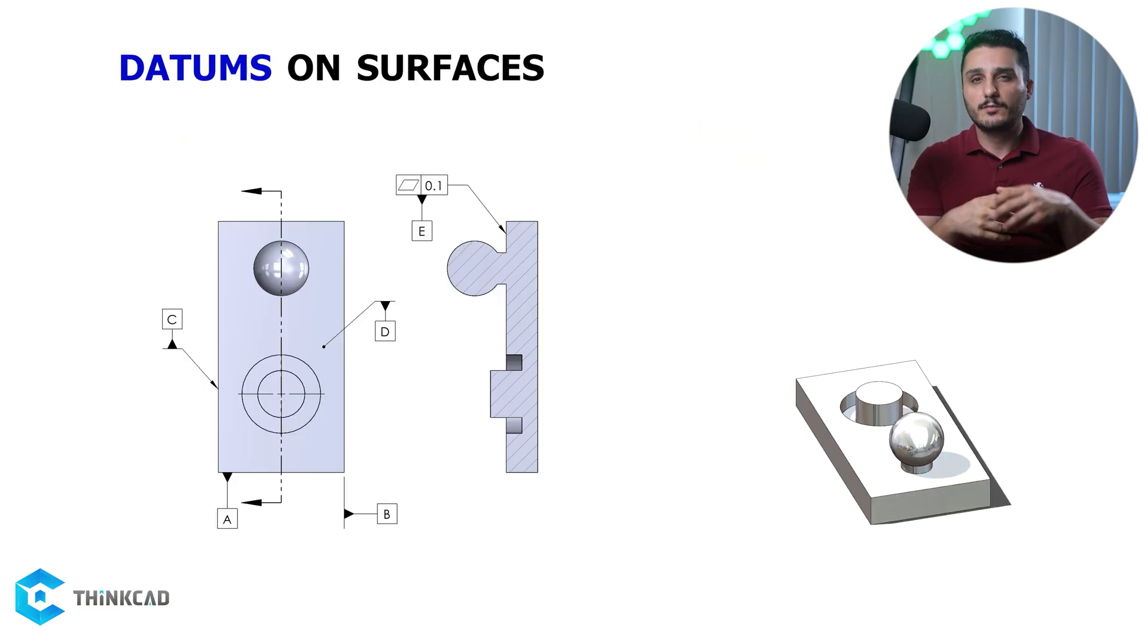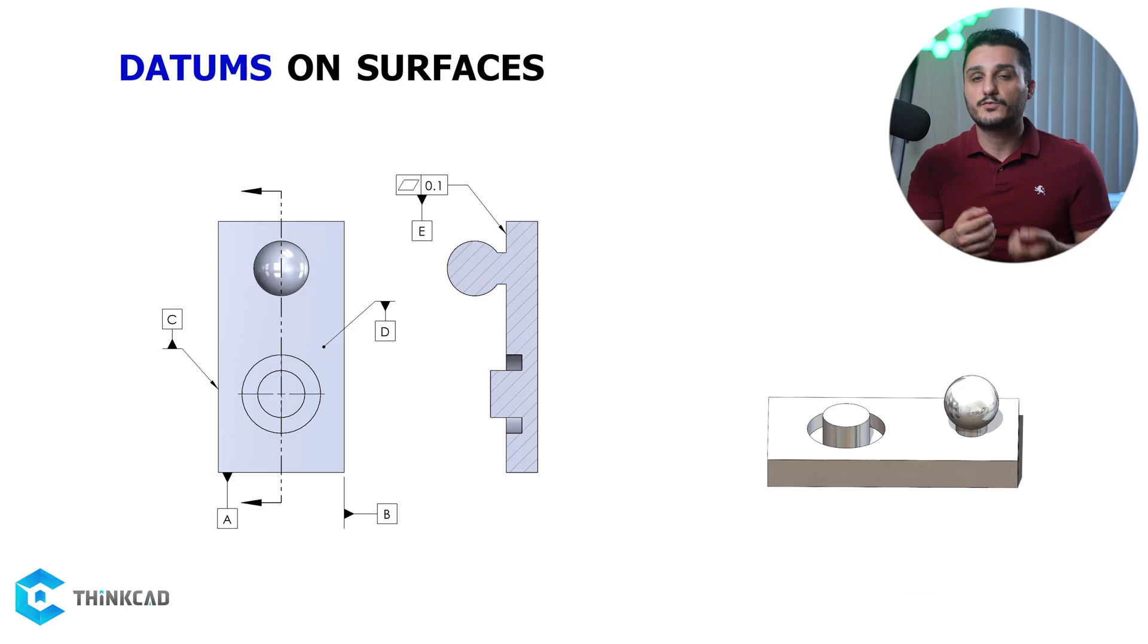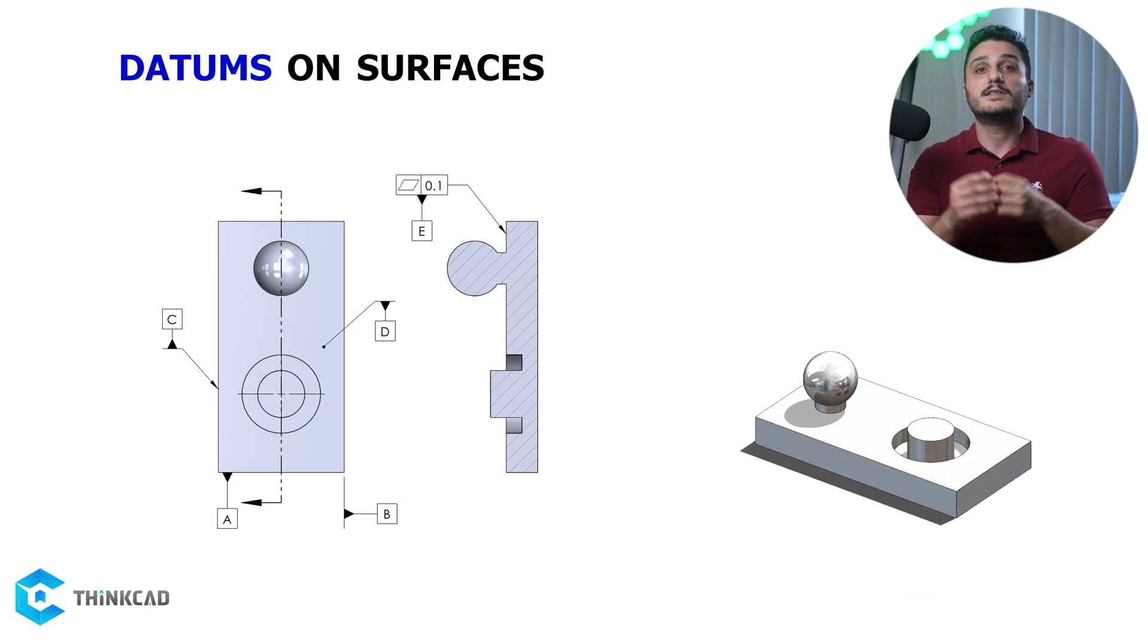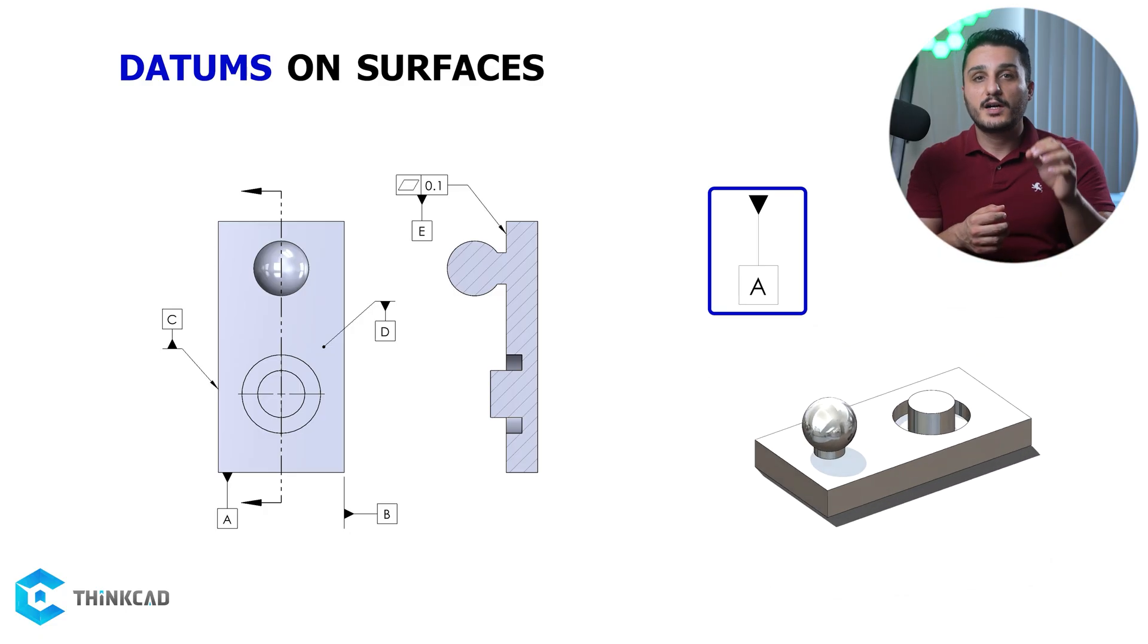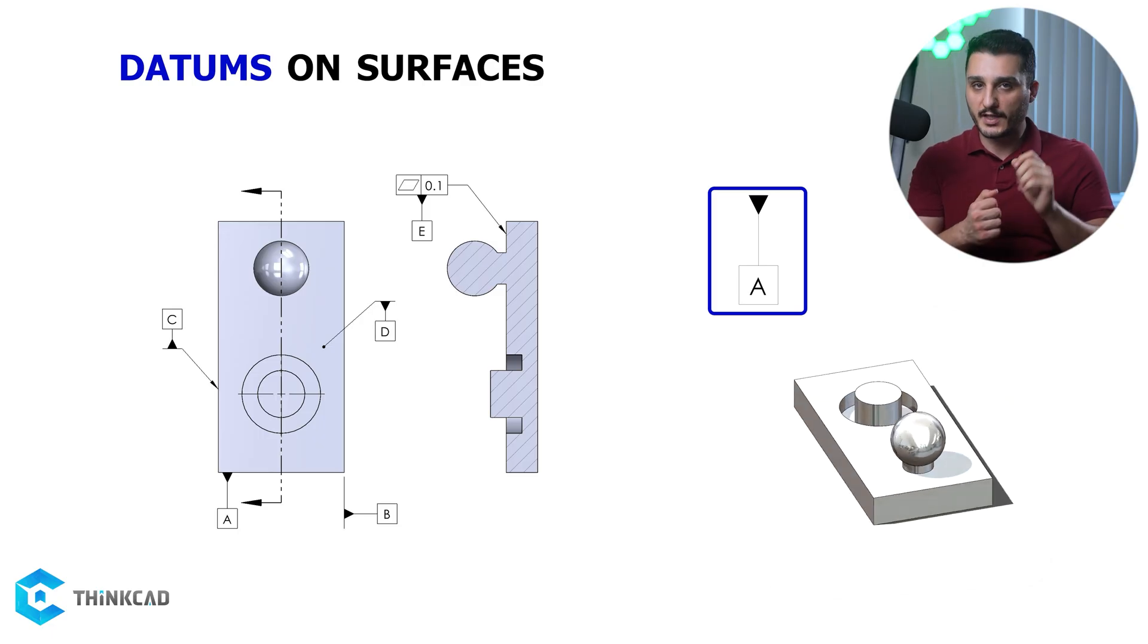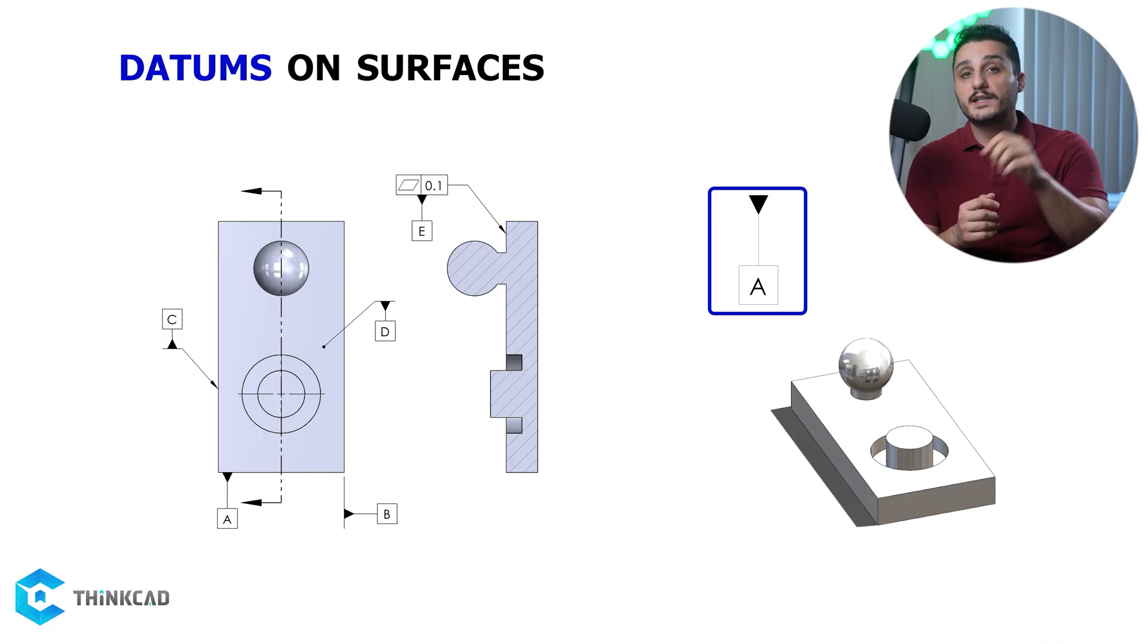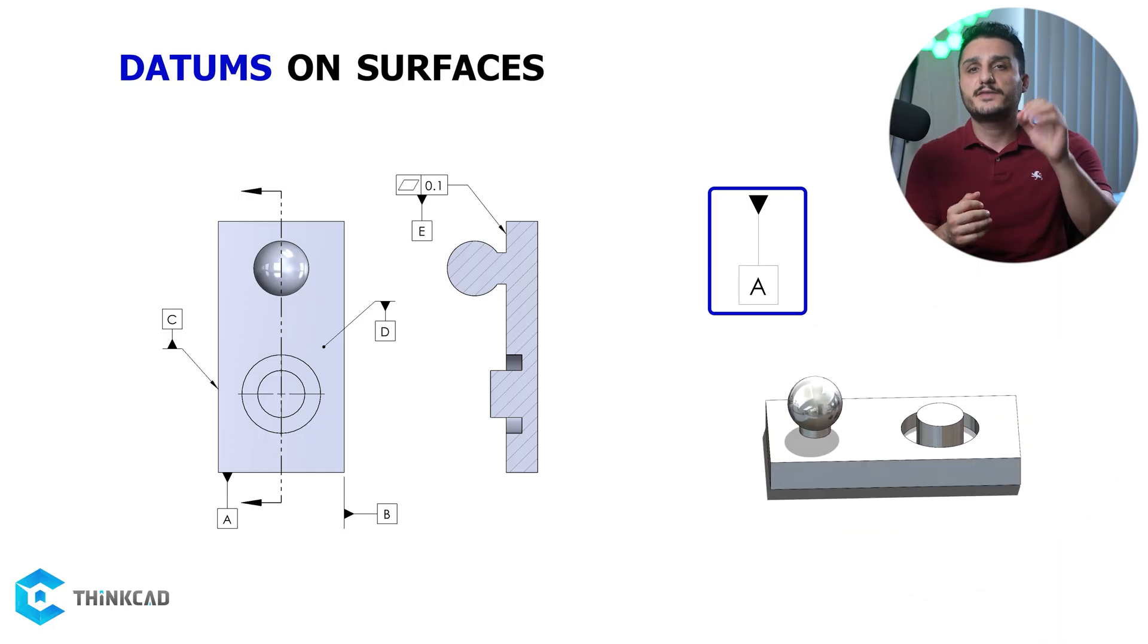Looking at this drawing, you can see some of the ways you can specify datums on regular features. What they have all in common is that the datum letter has to be in a box and should be connected to a triangle. You can even put the datum letter under your feature control frame that is pointing to your datum feature to define it, which is very common.